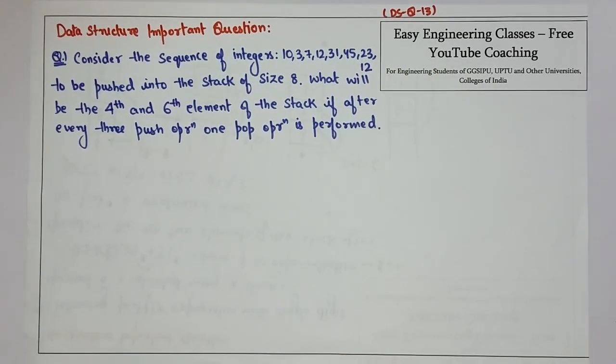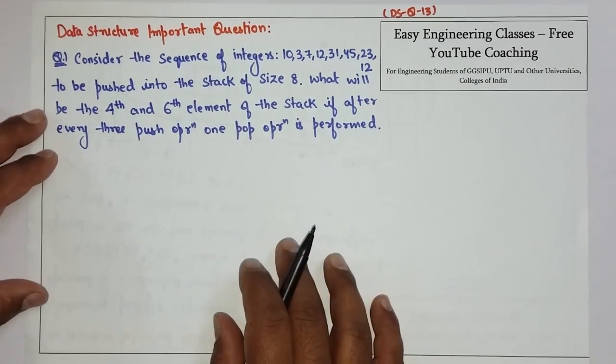And the integers have to be pushed into a stack of size 8. What will be the 4th and 6th element of the stack if after every 3 push operations 1 pop operation is performed. So, what we will do is,